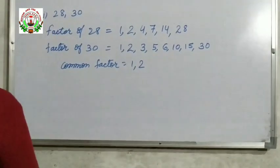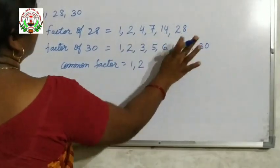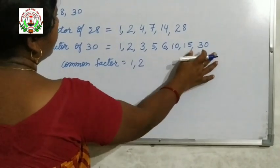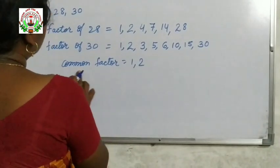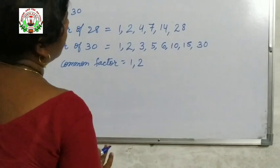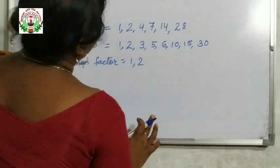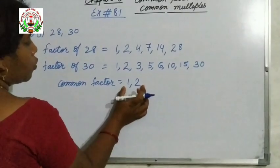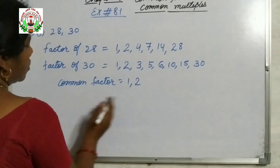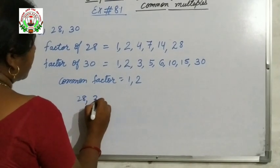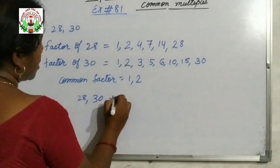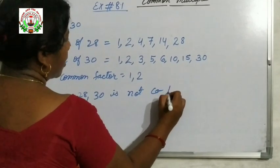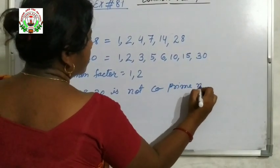Checking once again — factors of 28: 1, 2, 4, 7, 14, 28; factors of 30: 1, 2, 3, 5, 6, 10, 15, 30. So the common factors are 1 and 2 only, no other number is common. Since we are getting 2 common factors, 28 and 30 are not co-prime numbers.